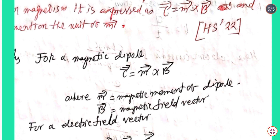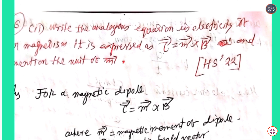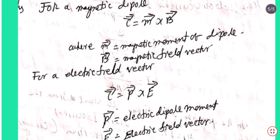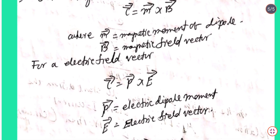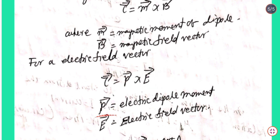The analogous equation in electricity is τ = vector p × vector E, where vector p is the electric dipole moment and vector E is the electric field vector.